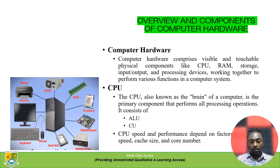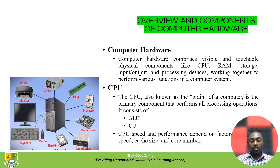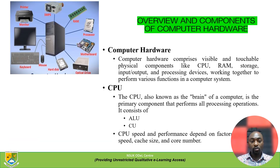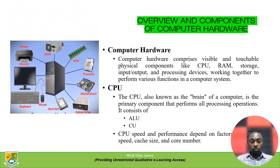The Arithmetic and Logic Unit (ALU) further comprises the arithmetic unit section that performs arithmetic operations, and the logical operations section. The Control Unit is the part of the circuit that provides control of the various tasks. CPU speed and performance depend on factors such as speed, cache size, and the number of cores in the processor.